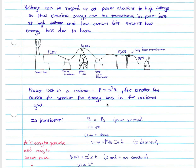The theory behind increasing your voltage and lowering your current comes from the power formula: your power lost in your resistor equals P = I²R. The smaller the current — smaller I — the smaller the energy lost in the national power grid. So if we decrease our current by increasing our voltage as we do at our step up transformer, we lose less power in our resistors.